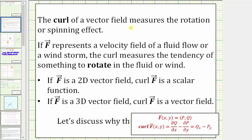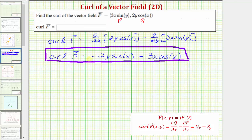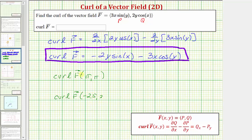Now remember, the curl of the vector field measures the rotation or spinning effect at a given location. So let's go ahead and evaluate the curl at two points in the given vector field, then look at it graphically. Let's find the curl of f at the point (π, π), and also the curl of f at the point (−2.5, 2). So the curl of f at (π, π) is equal to negative 2 times π times sine π, minus 3π times cosine π.